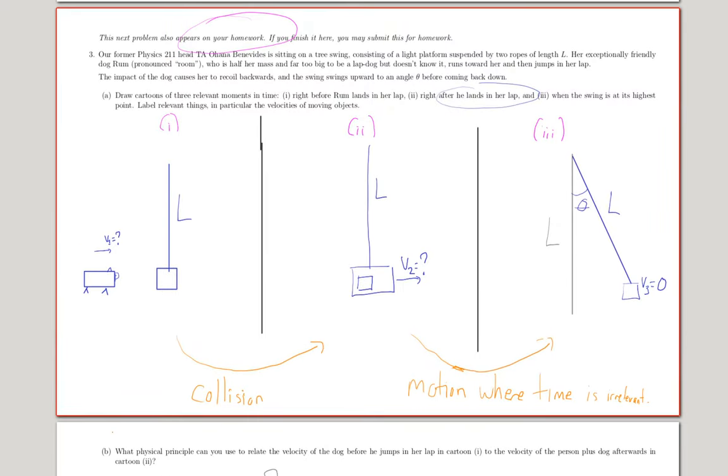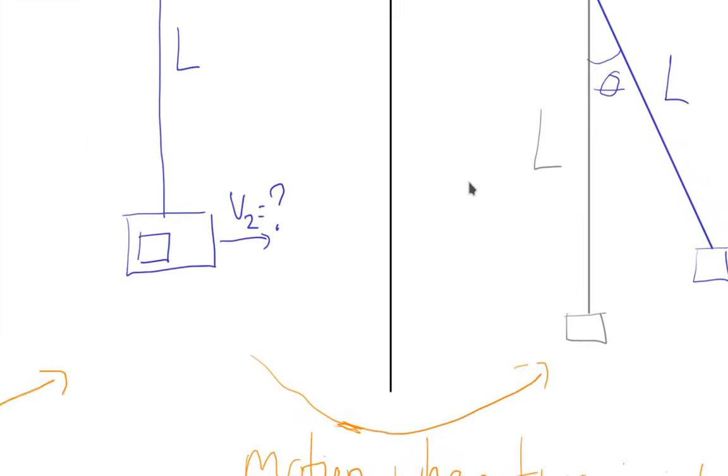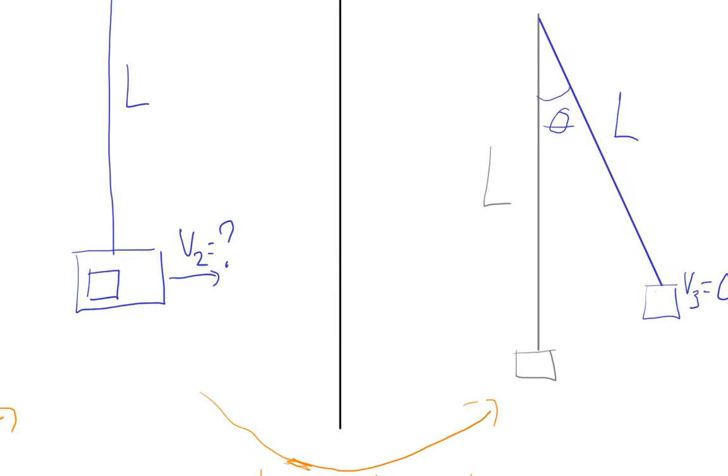There's one other piece of shenanigans in this problem, and I'll put a hint here for anyone watching the video. So in going from picture two to picture three, you will need to know the change in height of Rohana and her dog at the end of this rope. And that change in height here requires a little bit of geometry. So let's talk about that.